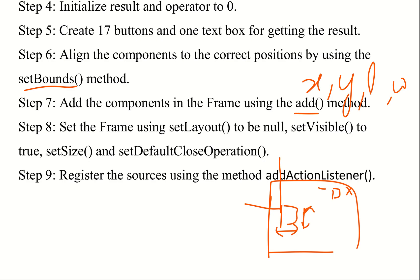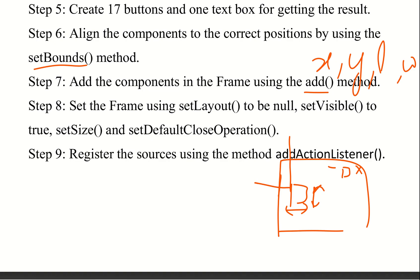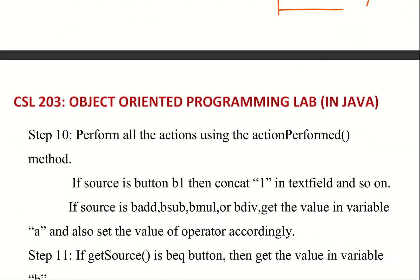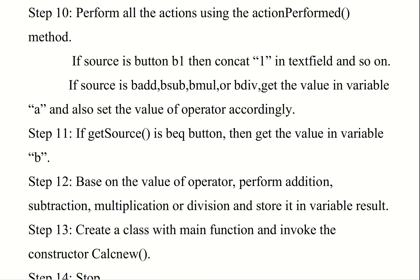Register the sources using the addActionListener method. We need to register the sources. Perform all the actions using the actionPerformed method. We need to import the source button and use the actionPerformed method. We get the source — if source button B1 is clicked, we need to click on the button.